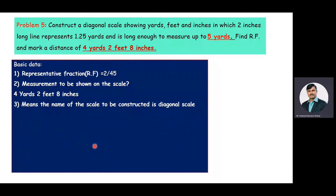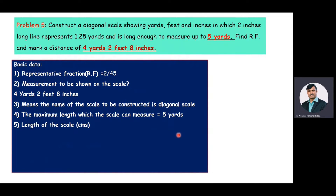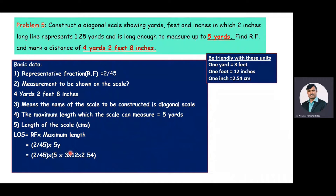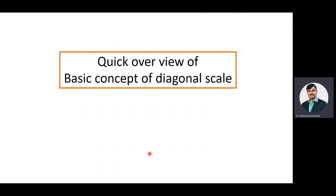The maximum length the scale can measure is 5 yards. With the RF value and maximum length, we calculate the length of the scale in centimeters: length of scale equals RF multiplied by maximum length, that is 2/45 times 5 yards. Converting 5 yards to centimeters — using 1 yard = 3 feet, 1 foot = 12 inches, 1 inch = 2.54 cm — after simplifying, the length of the scale equals 20.32 centimeters.